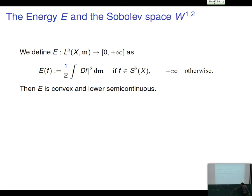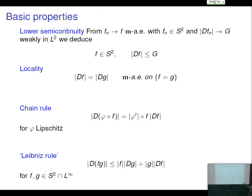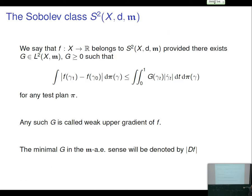This is true for every complete separable metric measure space with non-negative reference measure. The lower semi-continuity is also evident from the definition using test plans: if f_n → f and g_n → g in L², the right-hand side of the defining inequality converges, and so does the left-hand side, which is the advantage of using test plans.